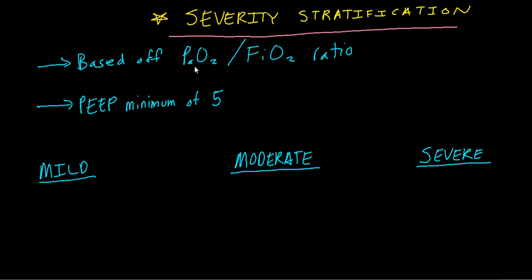The PaO2 is going to be your pressure of arterial oxygen. So you need a blood gas, an arterial blood gas sample. The blood gas is going to show the pH, the PaCO2, the PaO2, the bicarb, and the base excess or the base deficit. What we're concerned about is the PaO2.